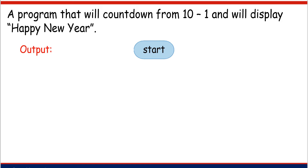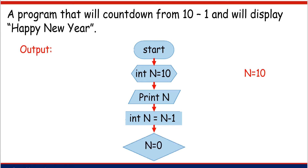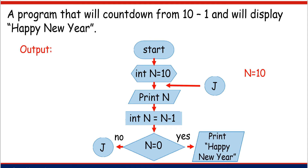First, write the start symbol. Next, write the first value inside the initialization symbol. Then print the value of that variable. After that, write the pattern inside the process symbol: int n is equal to n minus 1. After that, write the decision symbol. Inside the decision symbol, write the value obtained by adding the pattern to the last value of the program. The decision symbol will decide if the flowchart goes yes or no. Write the J entry on-page connector, then the J exit on-page connector. Once the condition is achieved, the program will print Happy New Year and end.